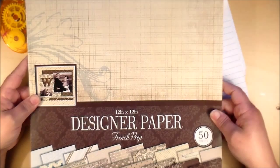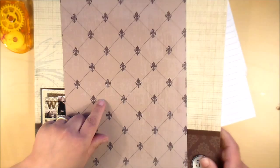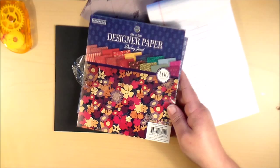The paper that I'm using was this 12 by 12 paper pack that I picked up at Walmart, called French prep designer paper. I'm using the fleur-de-lis designs. My dad is a Saints fan and he'll definitely appreciate the fleur-de-lis. The polka dot paper is from this little paper stack.